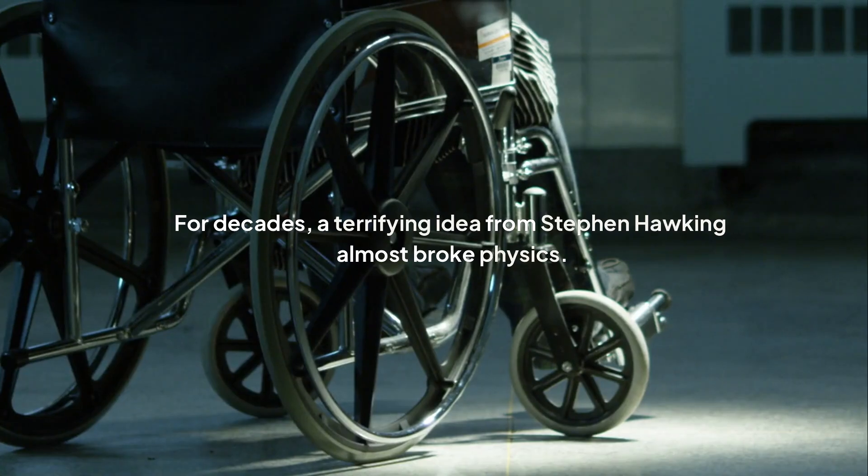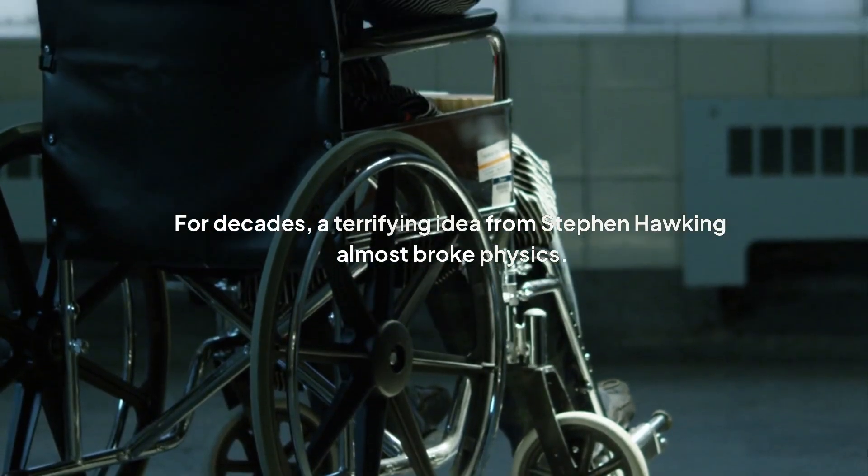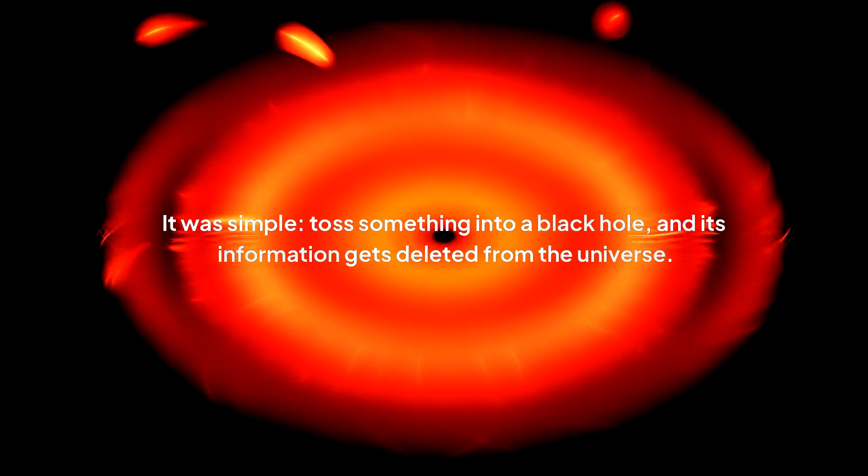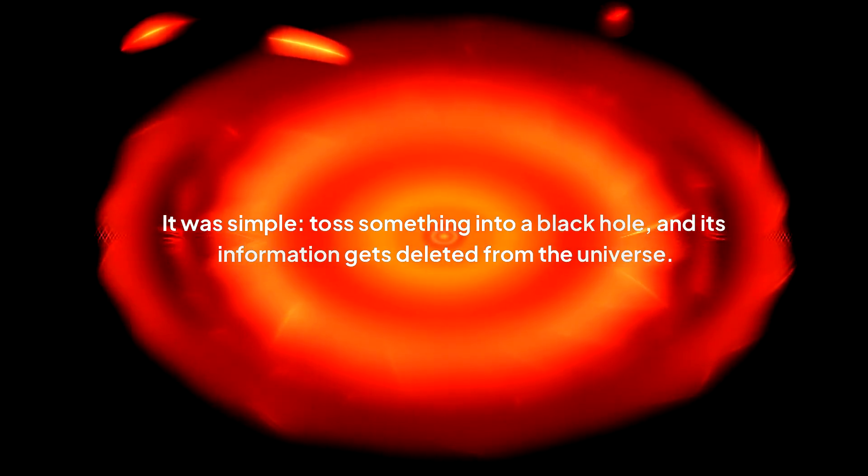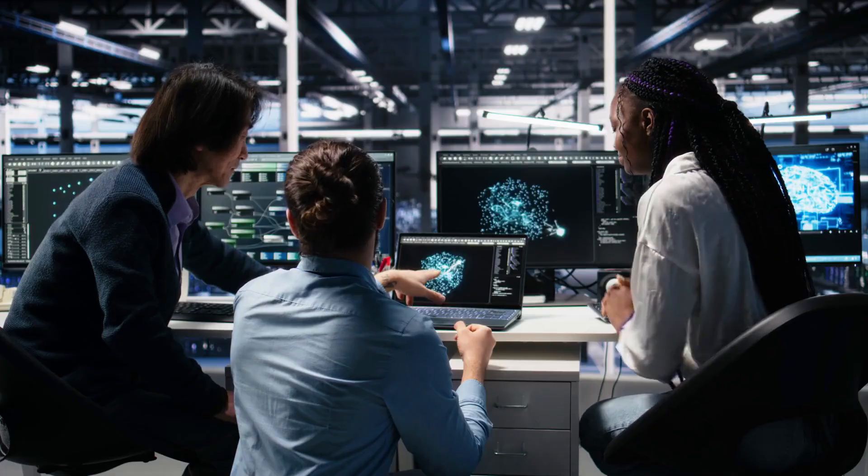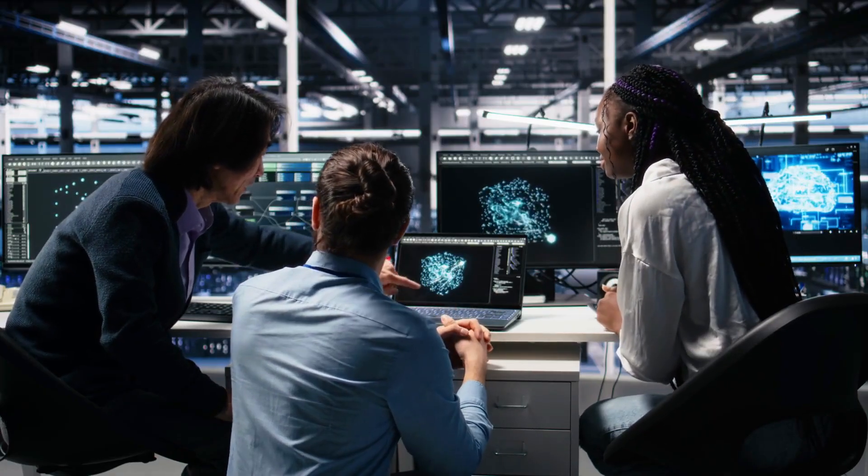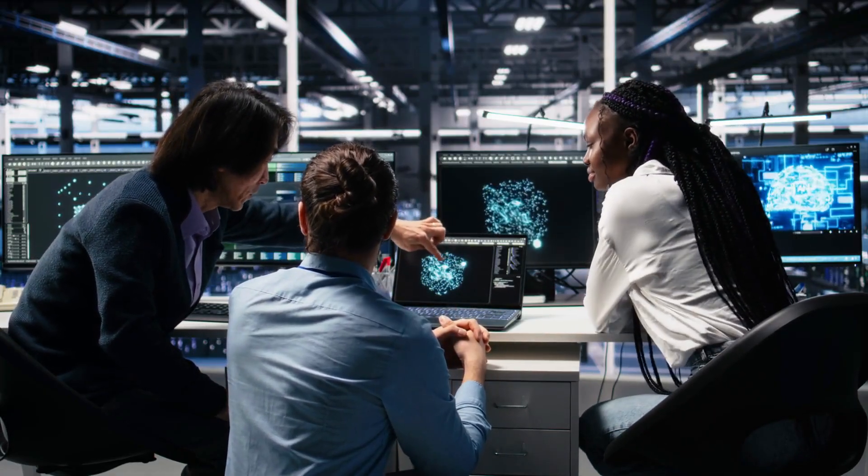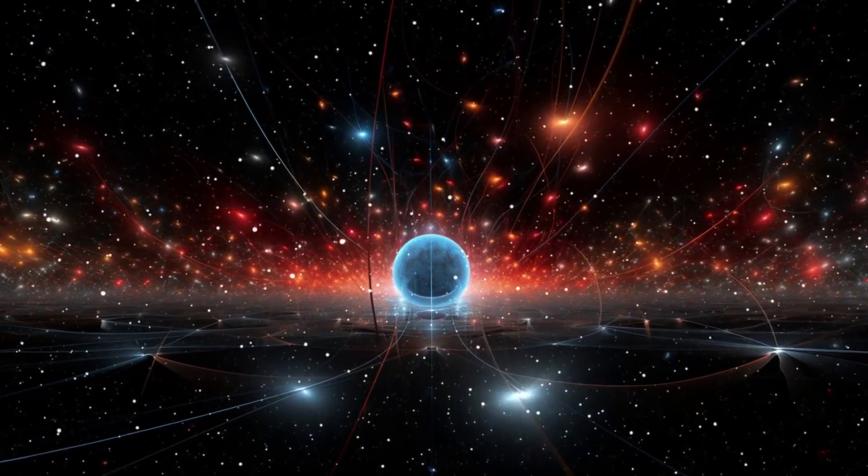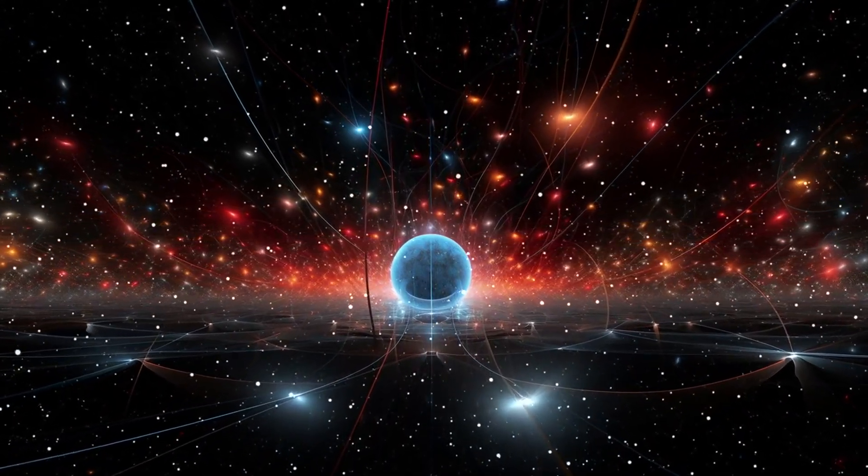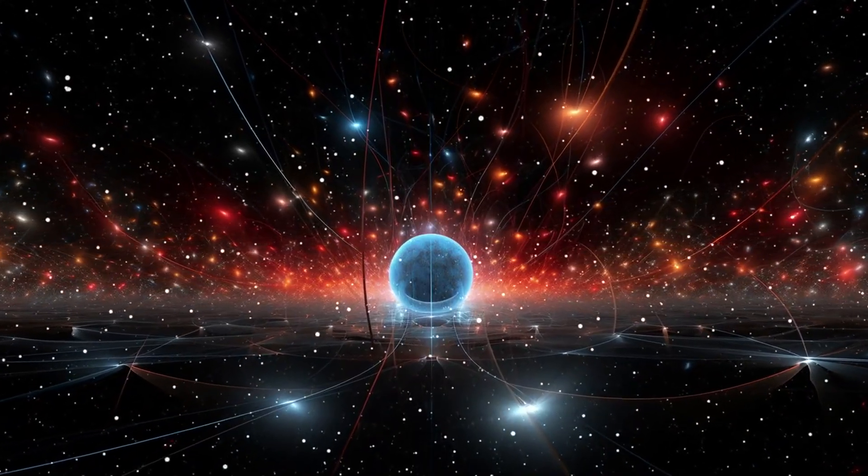For decades, a terrifying idea from Stephen Hawking almost broke physics. It was simple. Toss something into a black hole, and its information gets deleted from the universe. Forever. That shouldn't be possible. And it created a paradox that stumped the world's smartest people. But now, after 50 years of fighting, a completely insane theory about holograms and quantum weirdness might finally solve it.